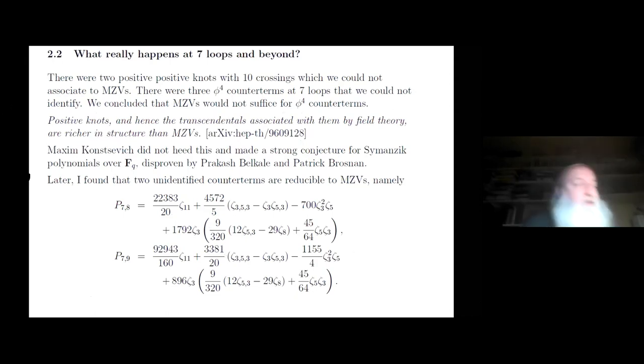So what really happens at 7 loops? Well, we found that there were two positive knots with 10 crossings which we couldn't associate to multiple zeta values. And there were three counterterms at 7 loops, which we couldn't identify. And so we concluded this led us to believe that multiple zeta values would not suffice for phi to the 4th counterterms. And I'm saying this in case Francis Brown is listening, because Francis is under the impression that we thought that we would always get multiple zeta values as Feynman periods.